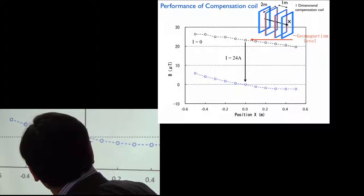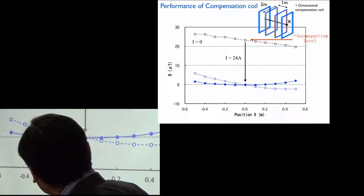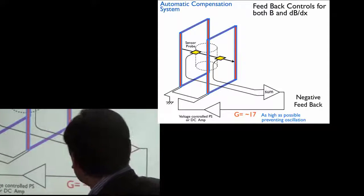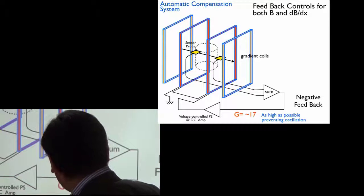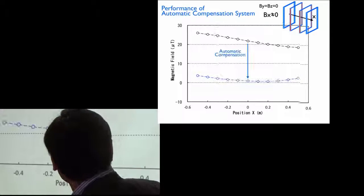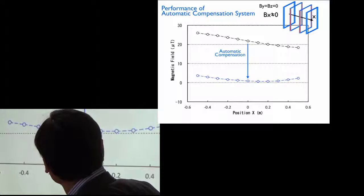And this is compensated. And also using another coil, we can cancel out the field gradient as well. And using this kind of automatic compensation system, we can automatically compensate the magnetic field and also the field gradient.